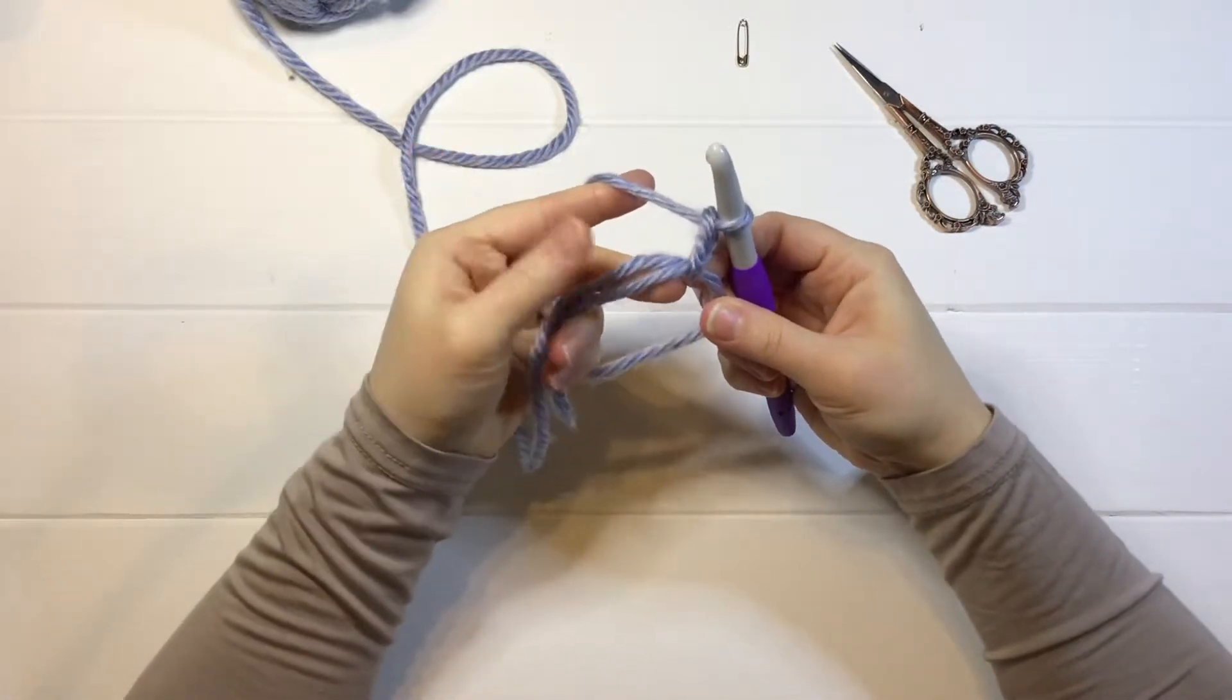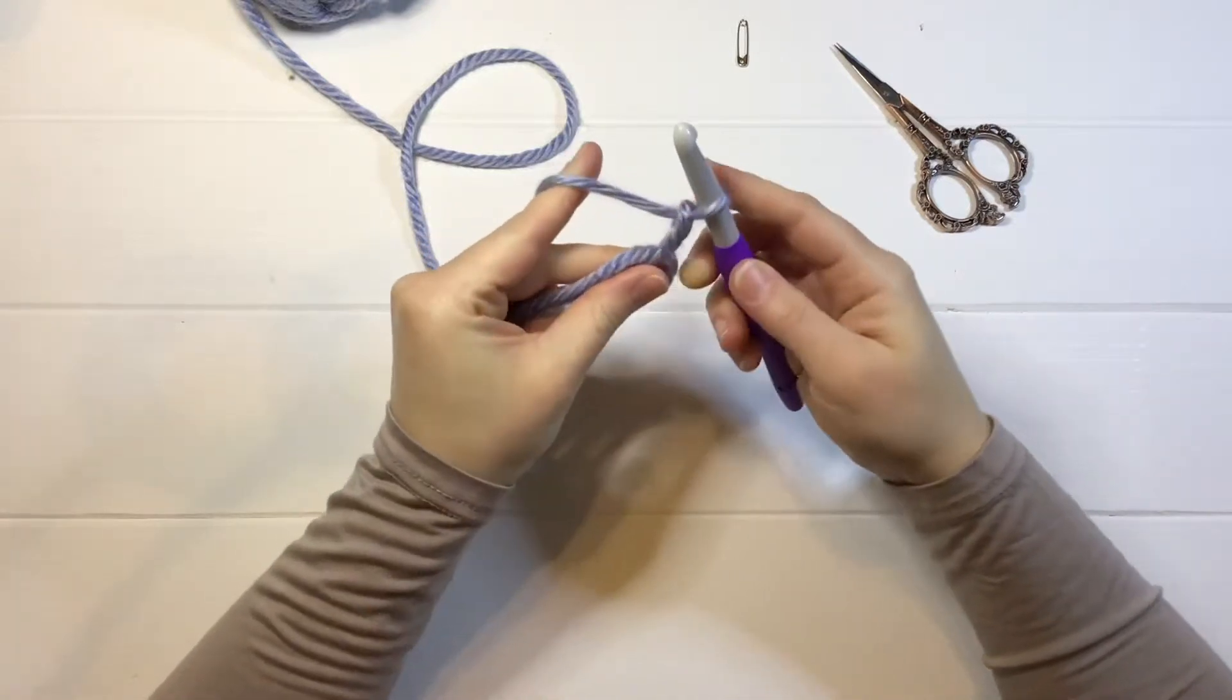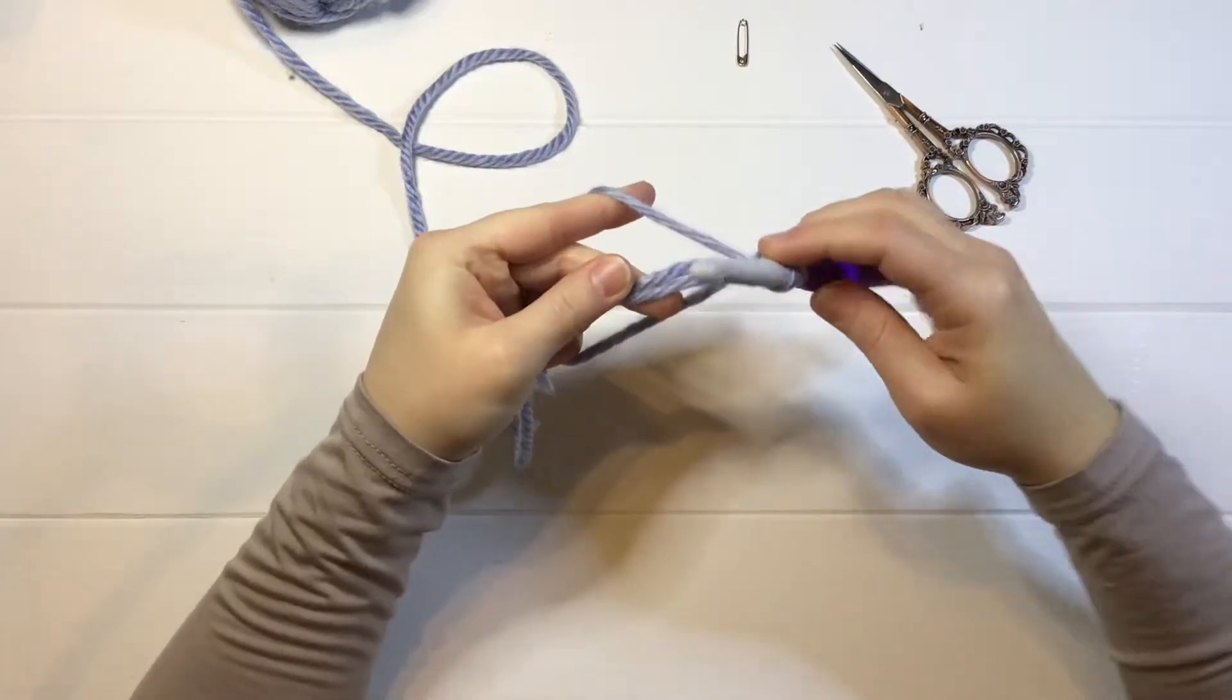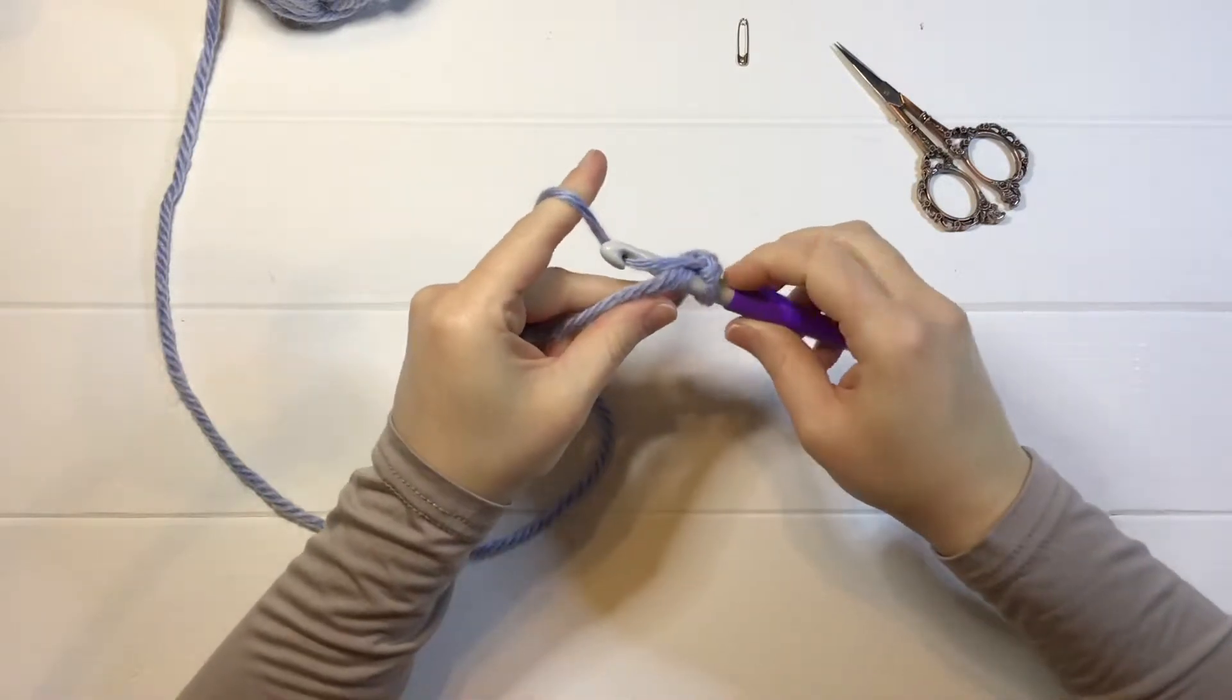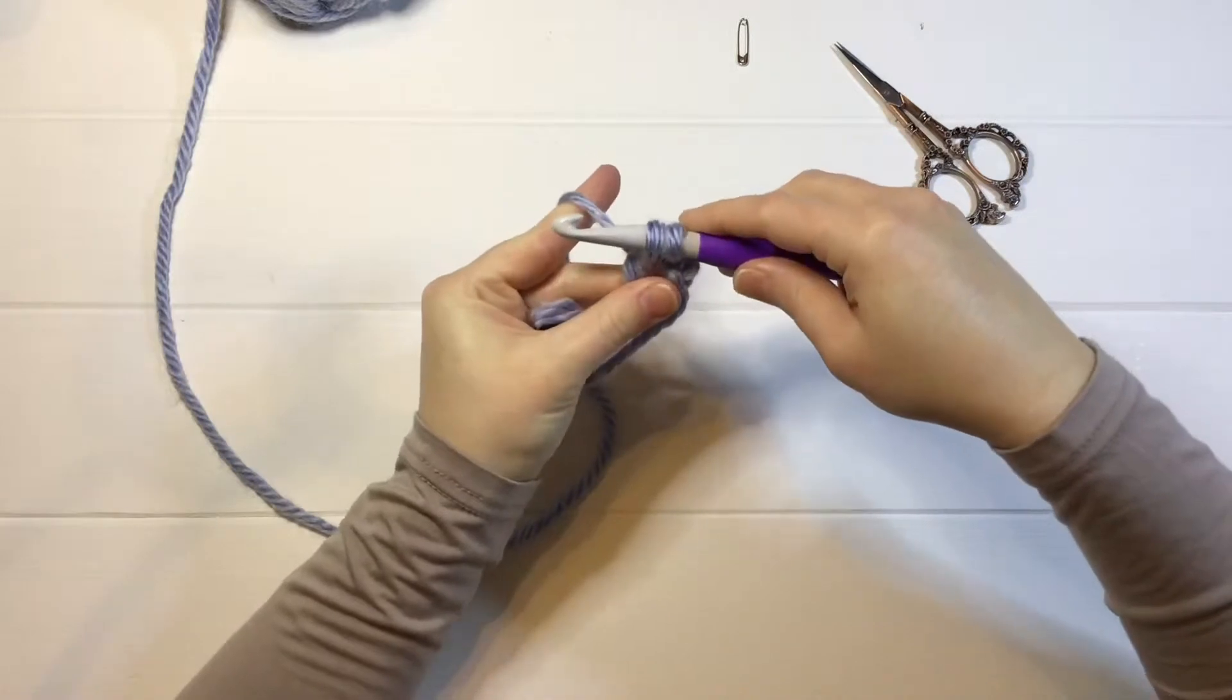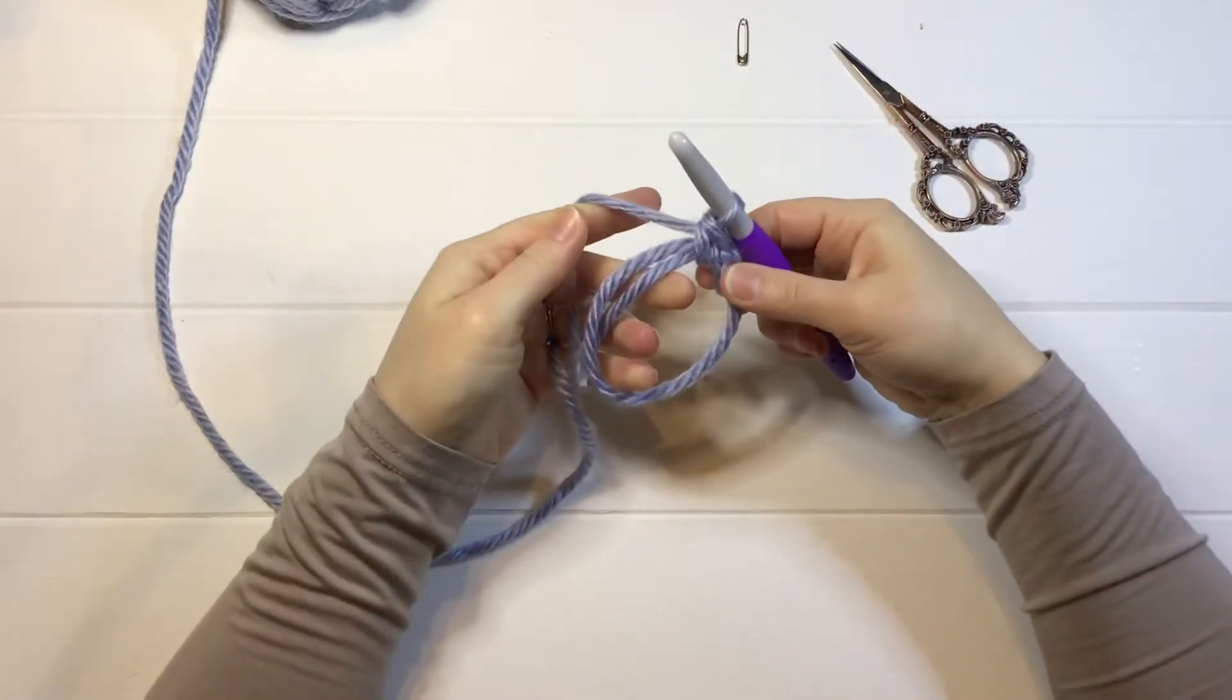And how I do that is I hold my yarn with my middle finger and my thumb, and I keep this nice and tight, and then you just insert your hook into that circle, yarn over, pull back through the circle, and then yarn over, and pull through both loops. And that's your single crochet.